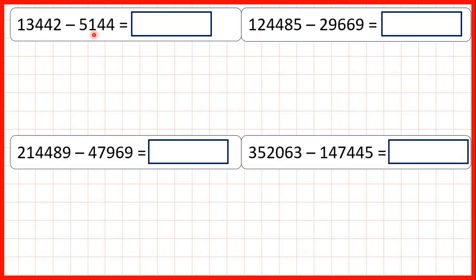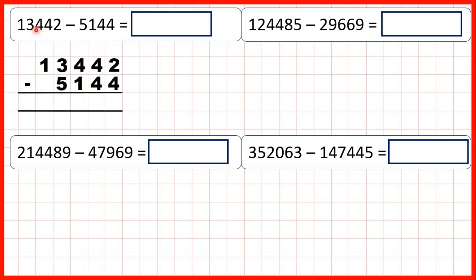We need to subtract using column subtraction. First, we have 13,442 minus 5,144. We've written the question out with our digits lined up on the right-hand side. So that means our ones, tens, hundreds, thousands, and ten-thousands place value columns will be lined up as well.